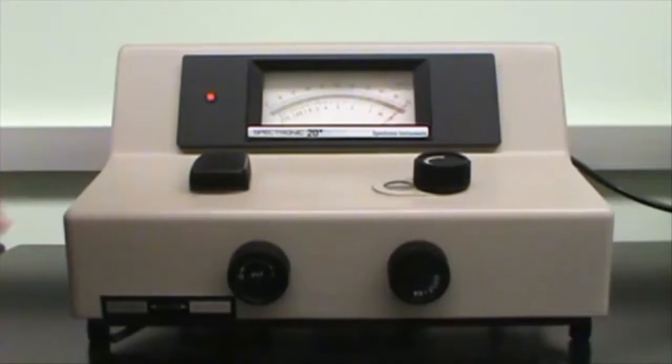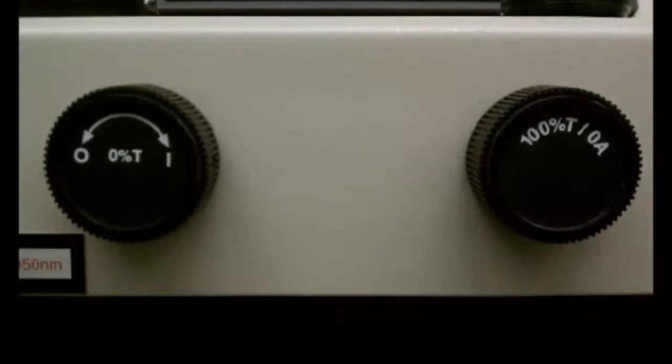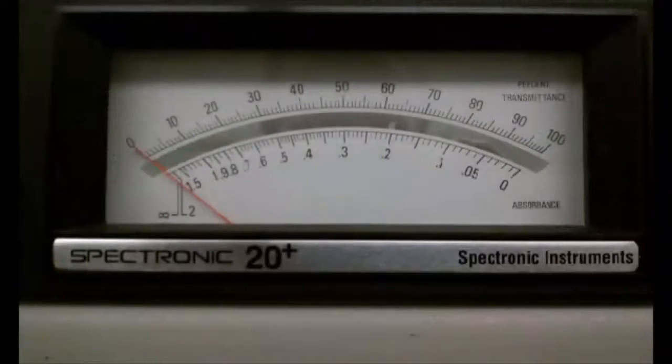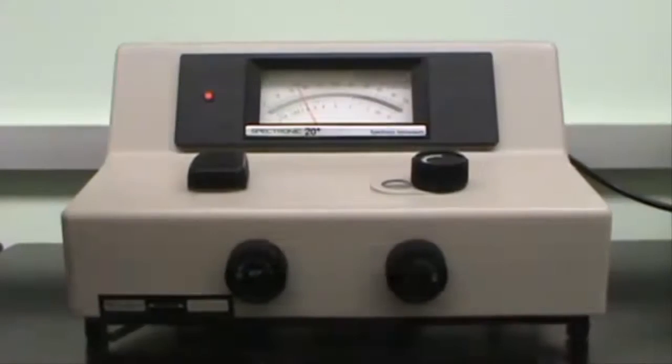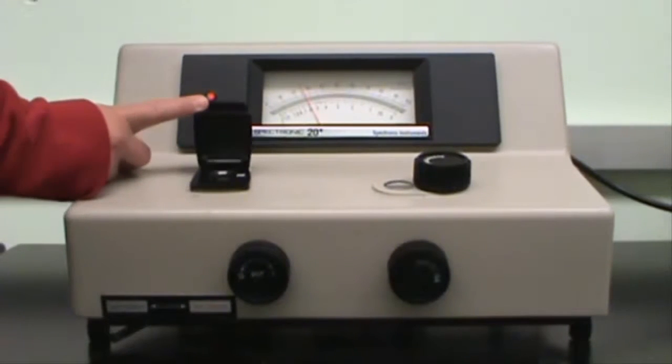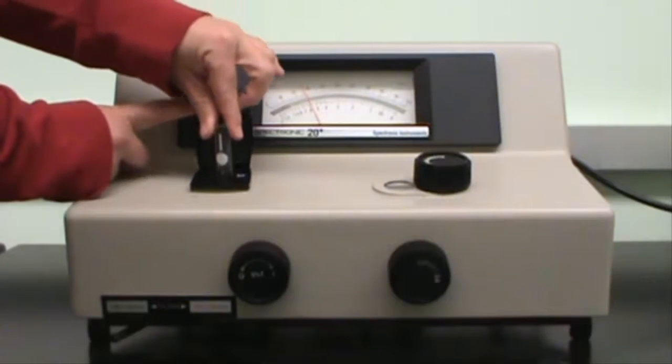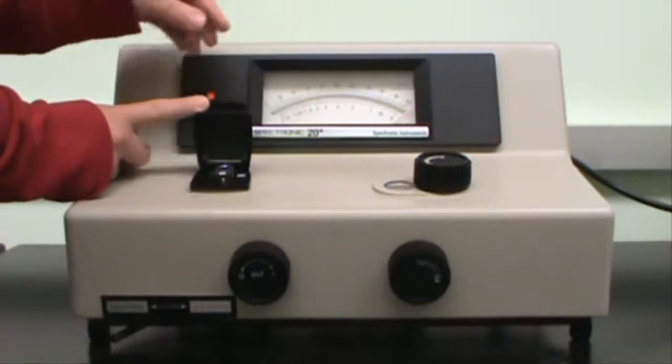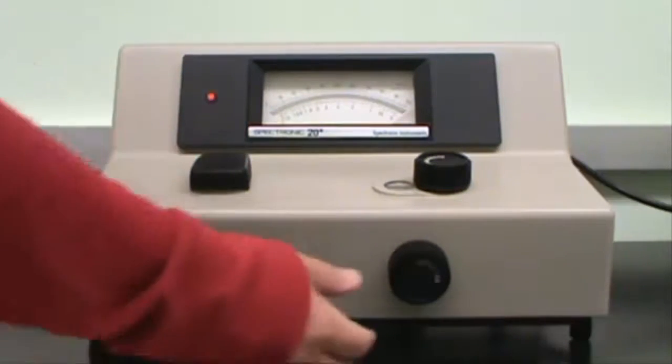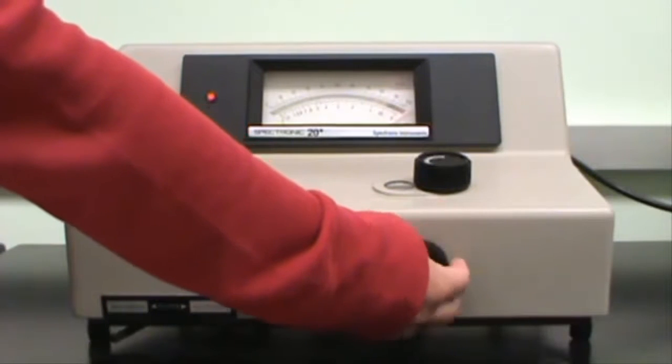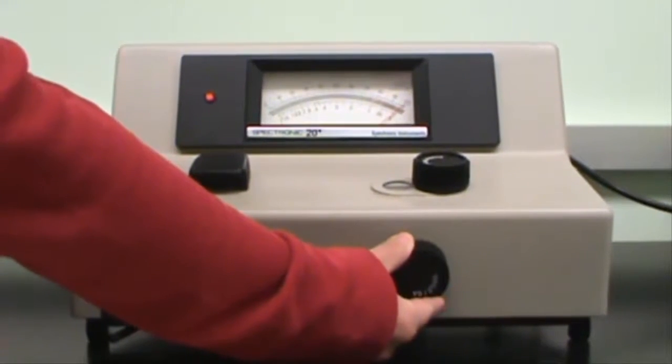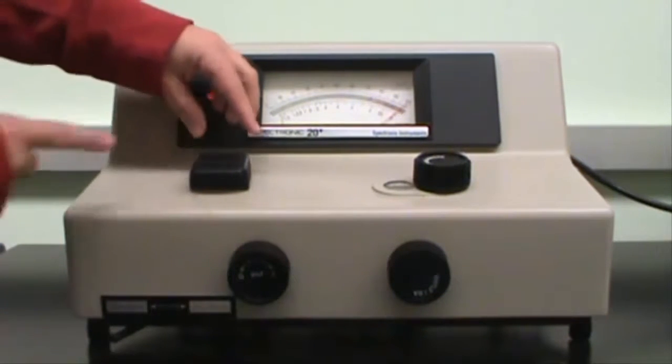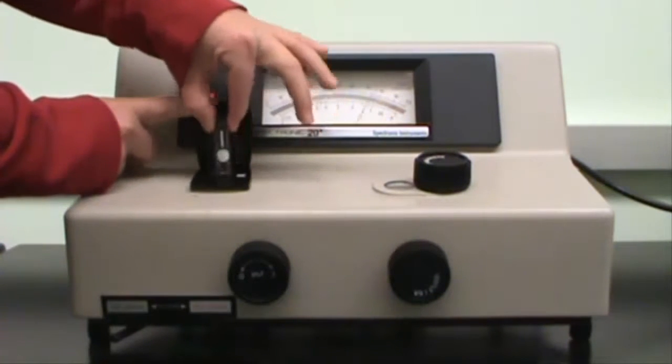Prior to putting anything in the SPEC20, adjust the 0%T knob so that the SPEC20 reads 0 on the top line in the white display area. Put the blank sample cuvette in the SPEC20 with the white and black lines lined up. Close the lid and adjust the 100%T slash 0A knob until the white display area shows zero absorbance. Remove the blank cuvette and place it in your test tube rack.